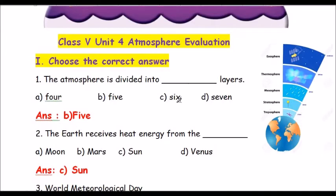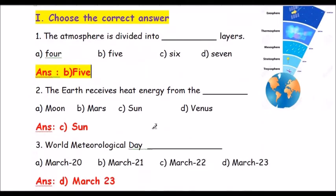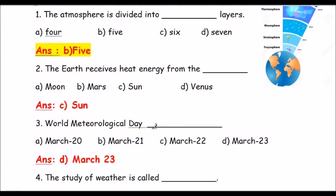Question one: The atmosphere is divided into how many layers? Options are a) 4, b) 5, c) 6, d) 7. Very correct — it is divided into five layers. The answer is option b) 5.